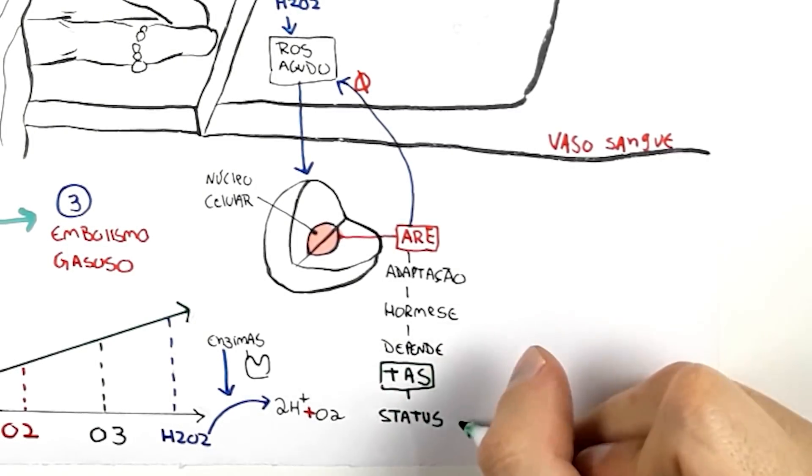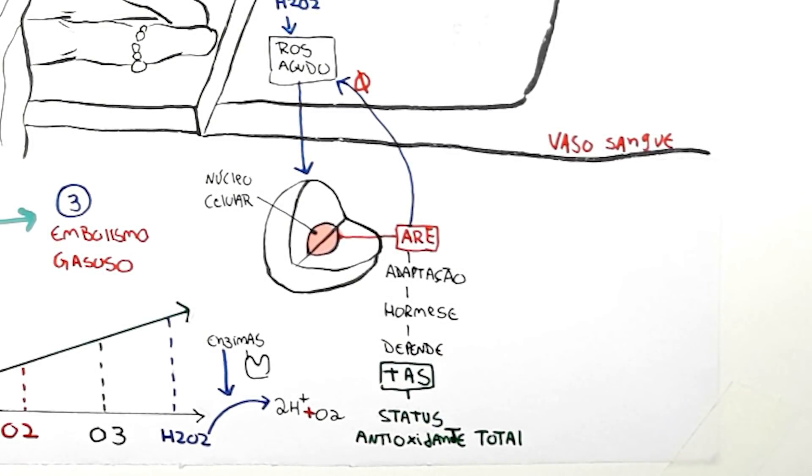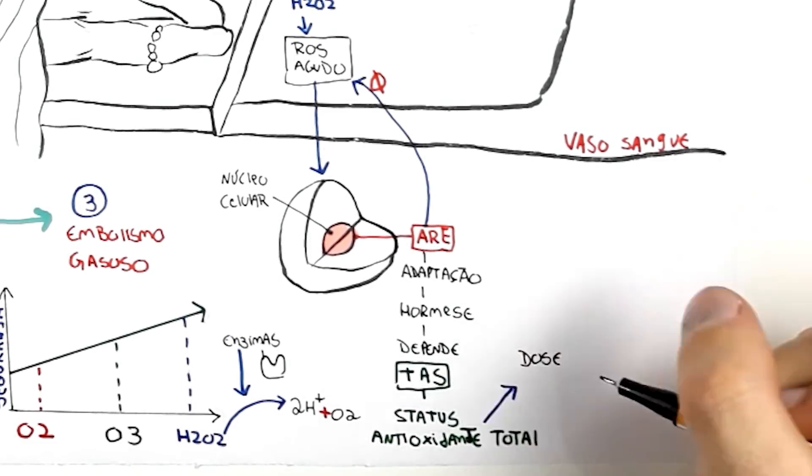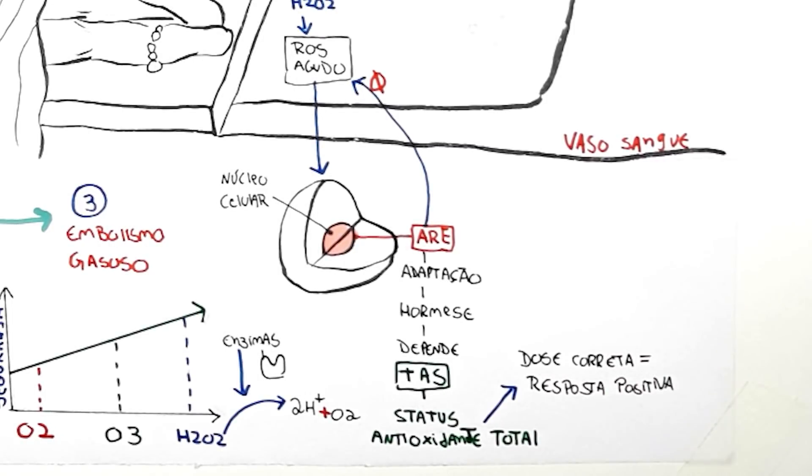TAS means total antioxidant status. In other words, the stronger my organism, the higher my TAS. And consequently, the greater my resistance, the greater my resilience against external oxidation. I adapt better. My body handles better the shock of what comes from outside. Now, if I'm sick, if my body is debilitated by some type of chronic disease, intoxication, etc., the lower my TAS. And consequently, the lower my resilience, my resistance against external oxidation and the lower my power to adapt to this injury.